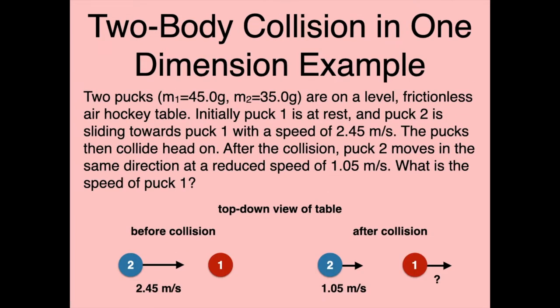The simplest example is a two-body collision in one dimension — all motion along a single line. Two pucks: M1 is 45 grams, M2 is 35 grams, on a level frictionless air hockey table. Initially, puck one is at rest and puck two is sliding towards puck one with a speed of 2.45 meters per second. The pucks collide head on; after the collision, puck two moves in the same direction but at a reduced speed of 1.05 meters per second. What is the speed of puck one after the collision?